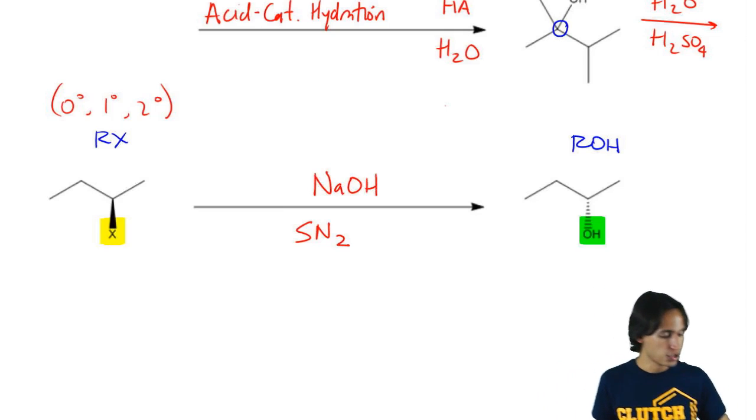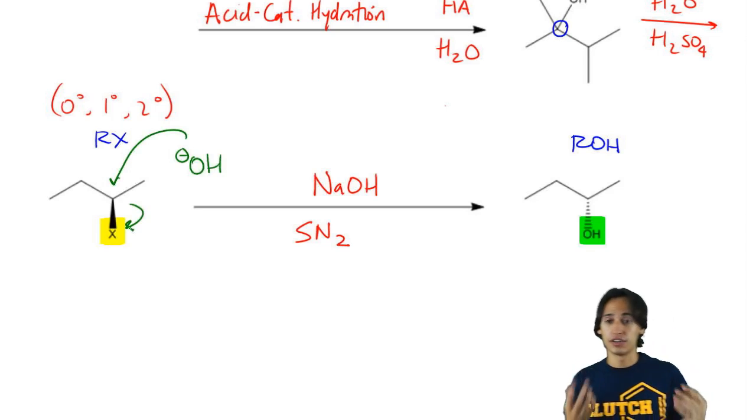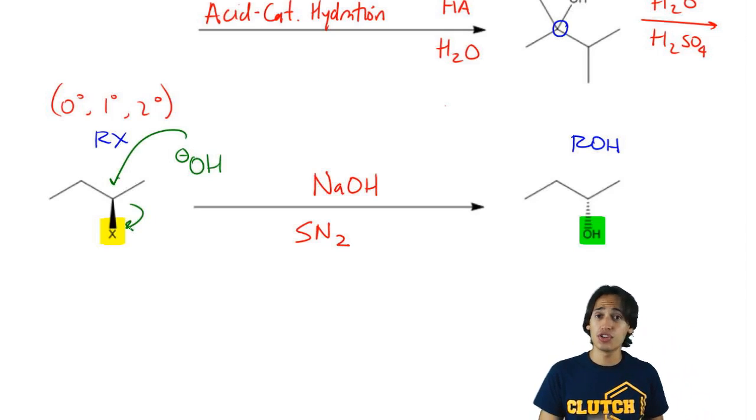And I need my nucleophile to be NaOH. If I can use NaOH, what I'm going to wind up getting is a backside attack where I kick out the X and I wind up getting my alcohol.